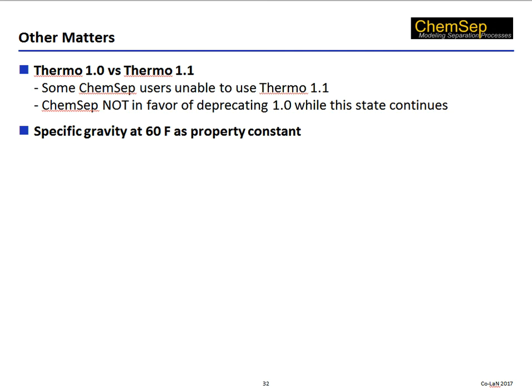Finally, some other issues. There are two CAPE-Open standards for thermo packages: 1.0 and 1.1. We understand that there is a proposal under consideration to deprecate Thermo 1.1. We are not in favor of this course of action because some of our users are not able to use Thermo 1.1. As long as this situation remains, we think it unwise to formally deprecate 1.0. Recently we had a need for specific gravity. We understand that this is not available as a standard CAPE-Open property constant. Liquid density at 25°C is available, but it is not the same as specific gravity and requires an involved conversion. We recommend making specific gravity at 60°F available as a CAPE-Open property constant.